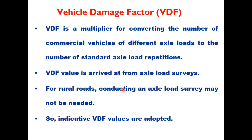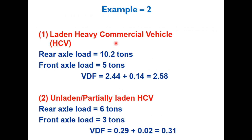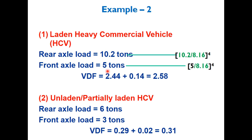Vehicle Damage Factor (VDF) is a multiplier for converting the number of commercial vehicles of different axle loads to the number of standard axle load repetitions. It is arrived at from axle load surveys, but for rural roads conducting such surveys in the field may not be feasible, so indicative values are proposed in the IRC code. For example, a laden heavy commercial vehicle with rear axle load of 10.2 tons and front axle load of 5 tons gives VDF of (10.2/8.16)⁴ = 2.44 plus (5/8.16)⁴ = 0.14, totaling 2.58.